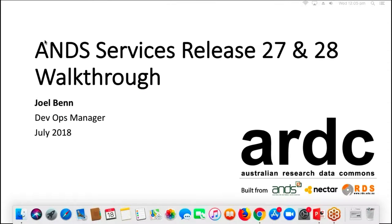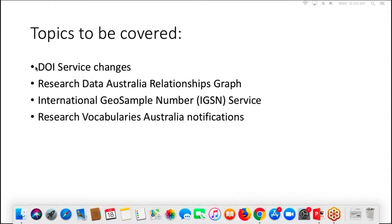Thanks everyone for tuning in. My name's Joel Benn. I'm the DevOps Manager for Software Development within ARDC and I'm going to walk through today some of the changes that were put in for release 27 and 28. I'm going to talk about the DOI service changes implemented in R28, a new feature in Research Data Australia which is a relationships graph visualisation, the International Geo Sample Numbers Service, and the Research Vocabulary Australia notifications put in in release 28.